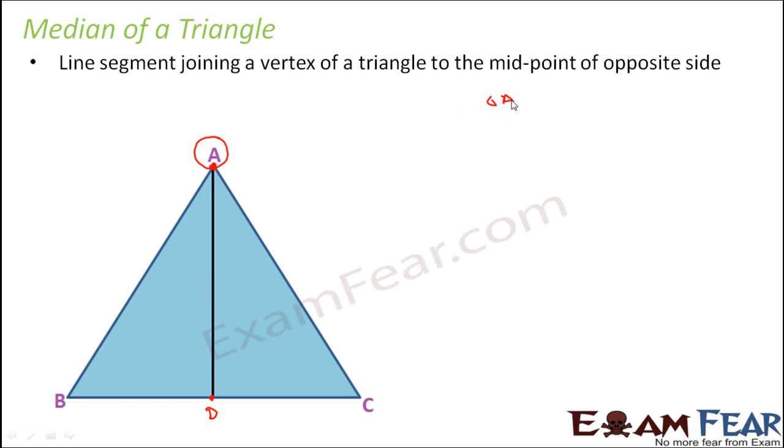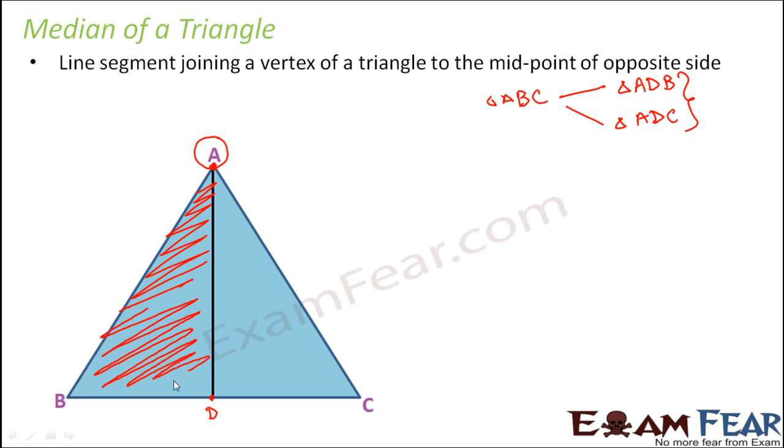Now with the help of one median, you have been able to divide this triangle into two equal triangles: triangle ADB and triangle ADC. Now when I said two equal triangles, what I mean is the area of these two triangles are equal. That is, this area is equal to this area. So this entire area occupied by triangle ADB is equal to this total area occupied by triangle ADC.